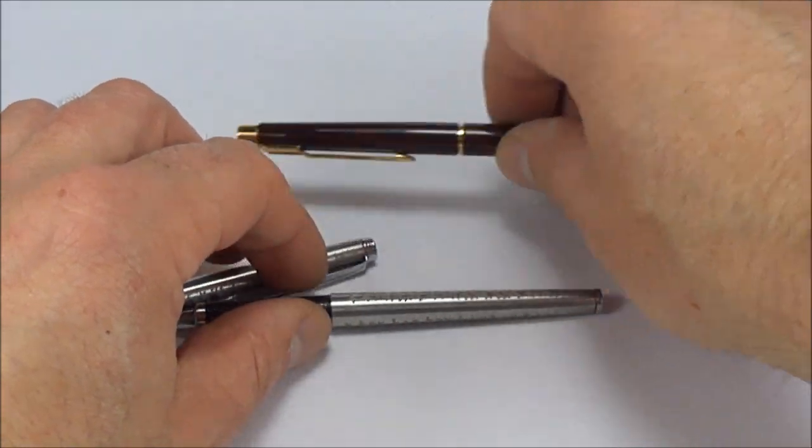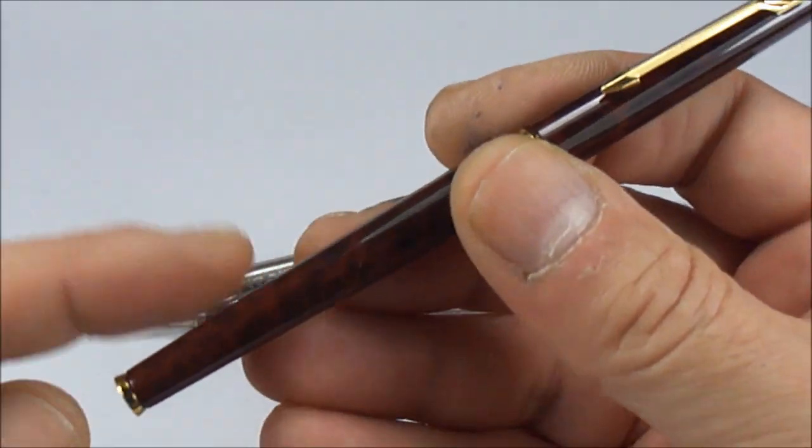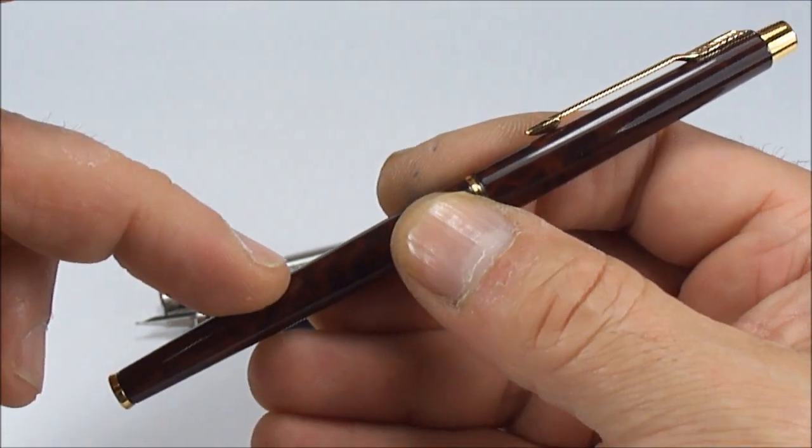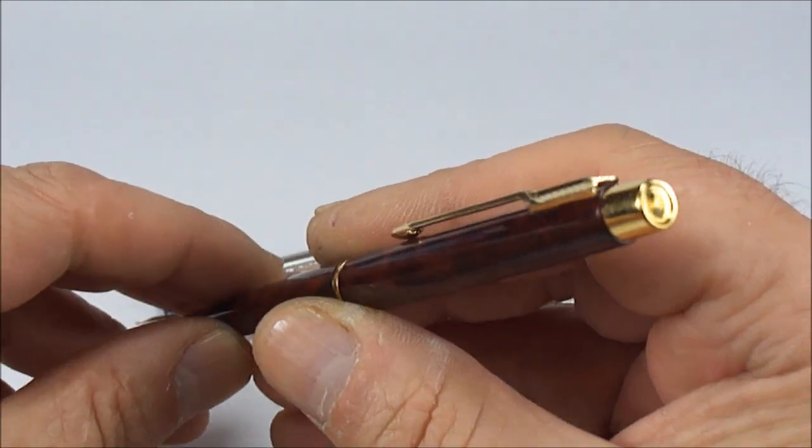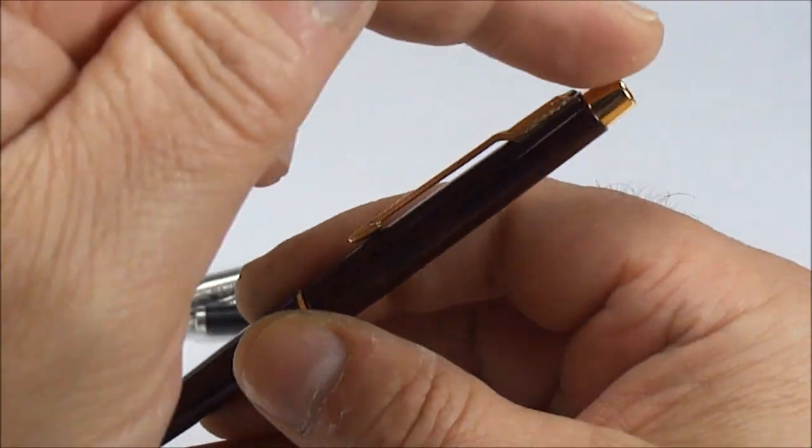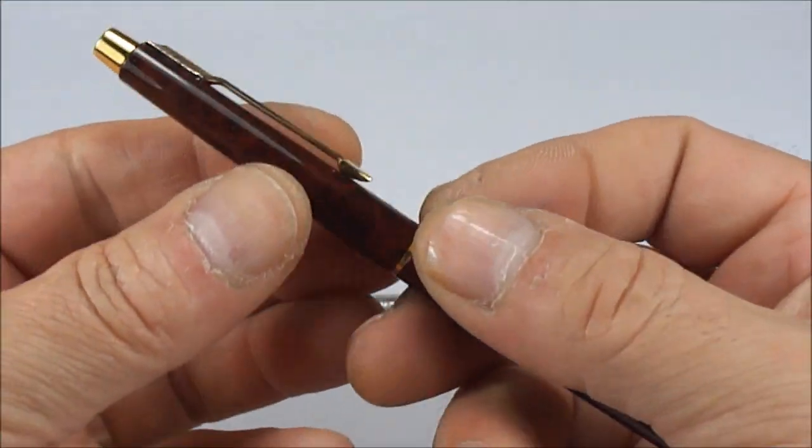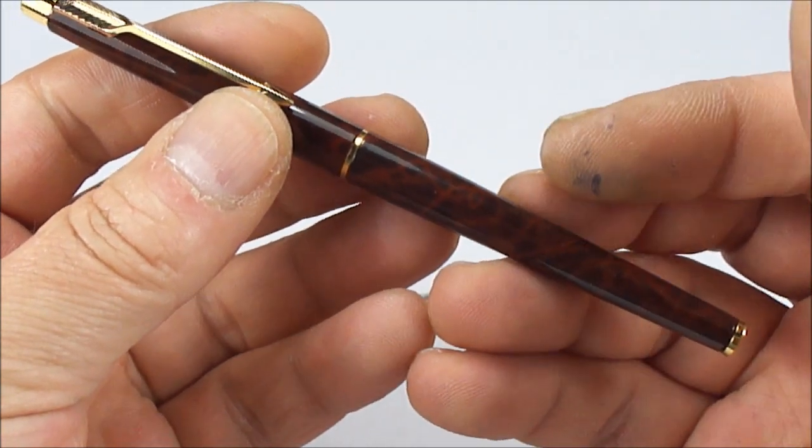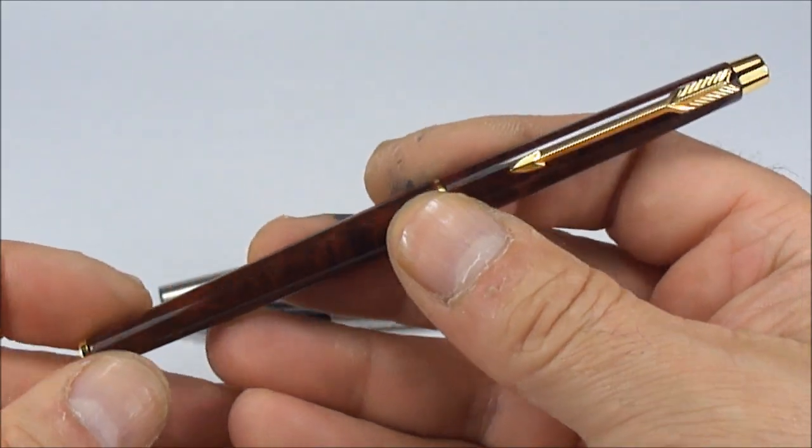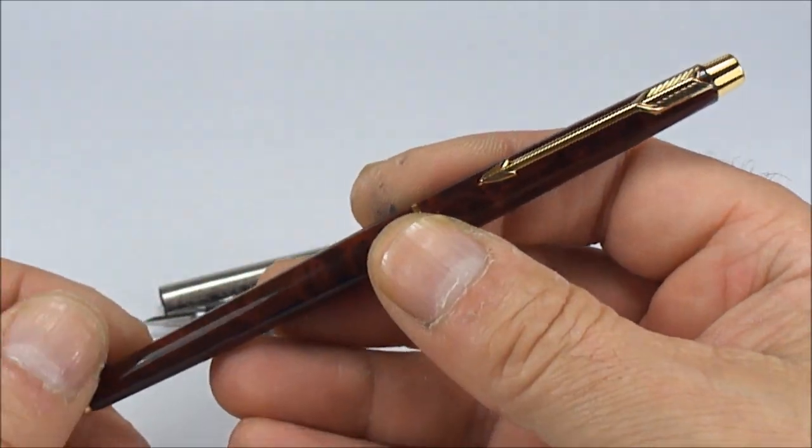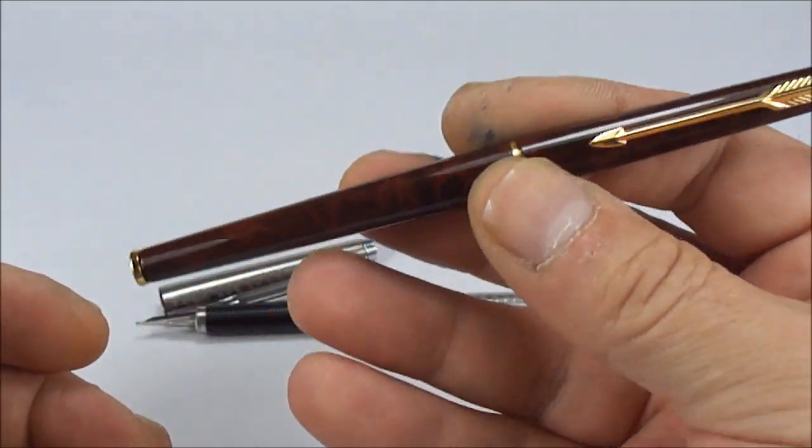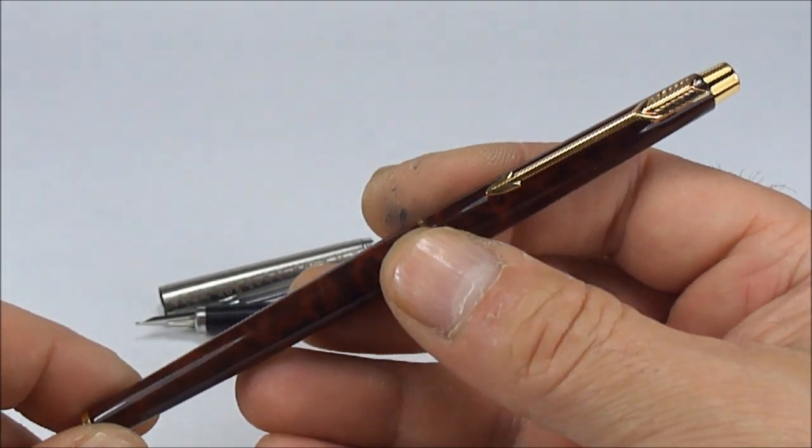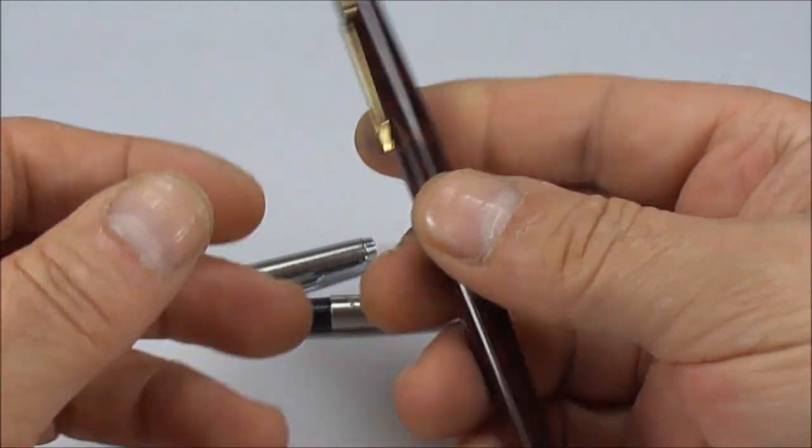The Parker Classic actually started as ballpoint pens and pencils. The fountain pen version was introduced around 1986. The Classics were out from 1967 through 1994, but initially as ballpoint pens and pencils. The fountain pen came around 1986.